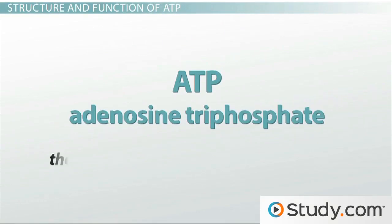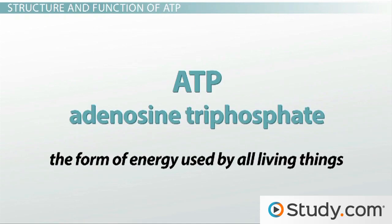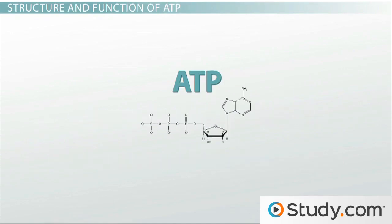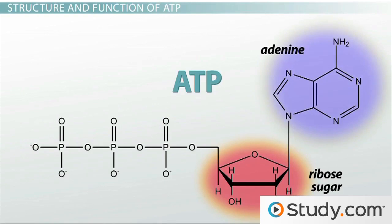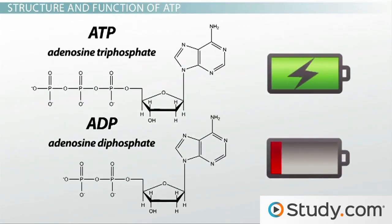ATP is the form of energy used by all living things. It's composed of a ribose sugar, an adenine base, and three phosphates — one, two, three. The easiest way to think about ATP is like a rechargeable battery. When ATP is charged and energized, it has three phosphates.